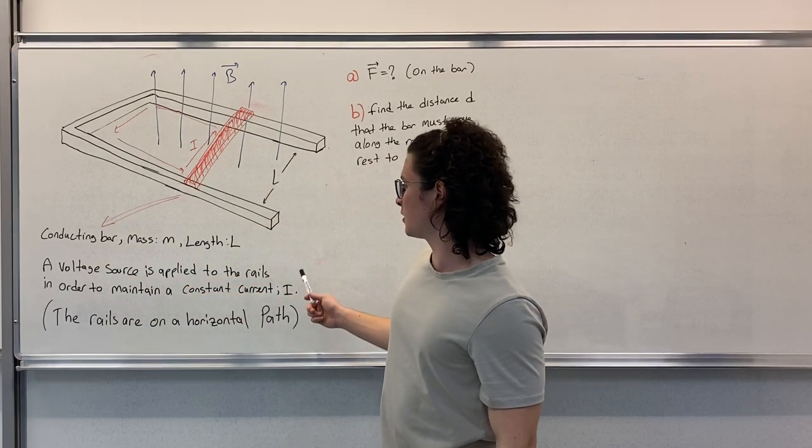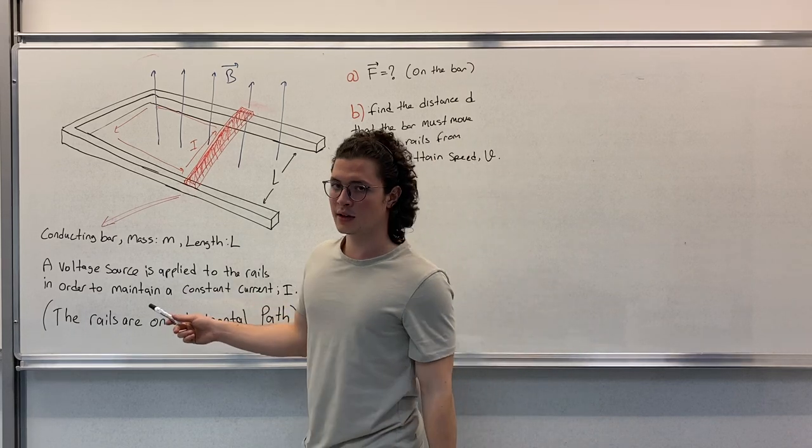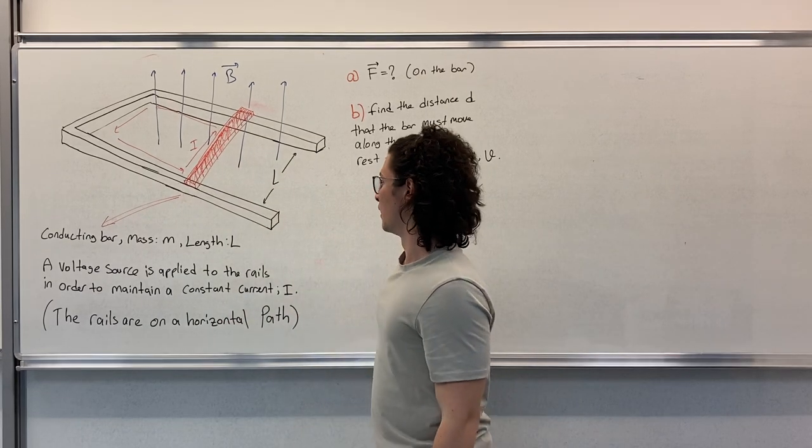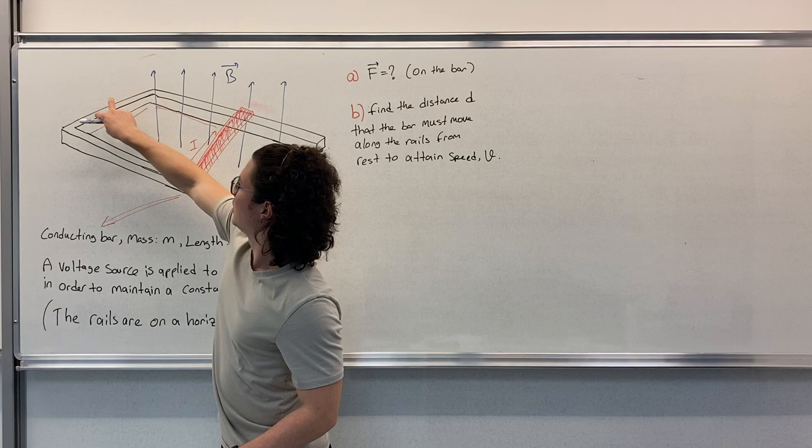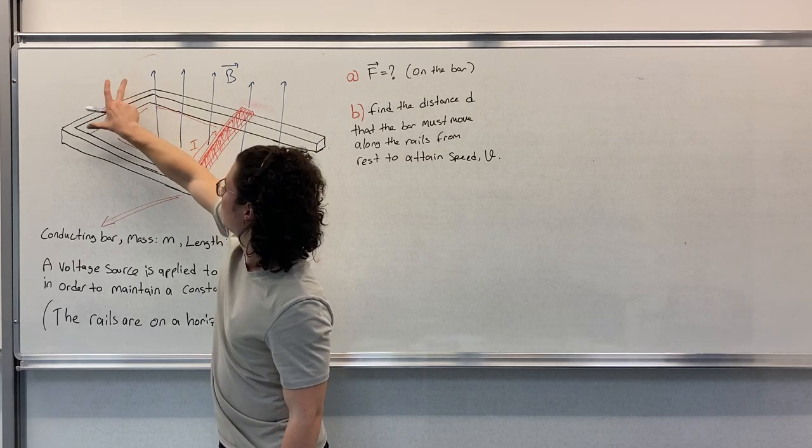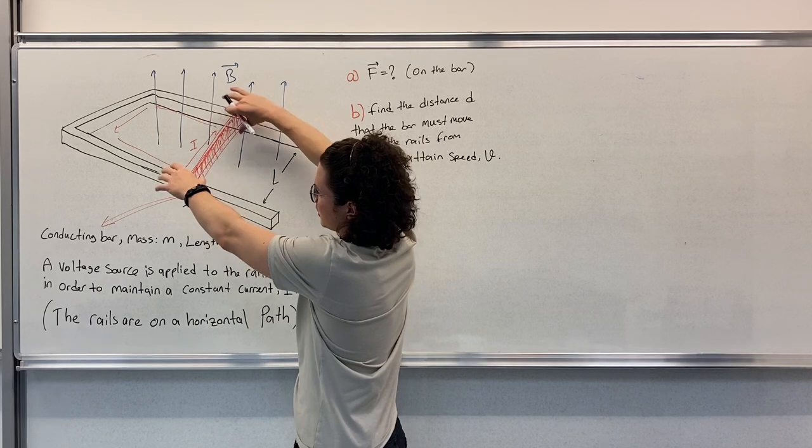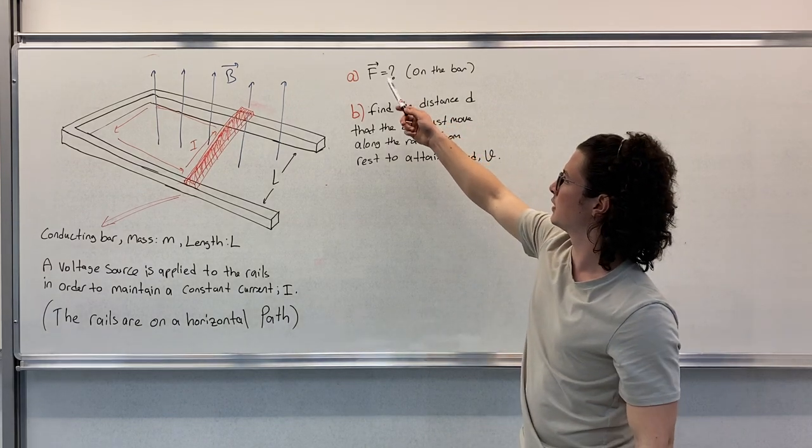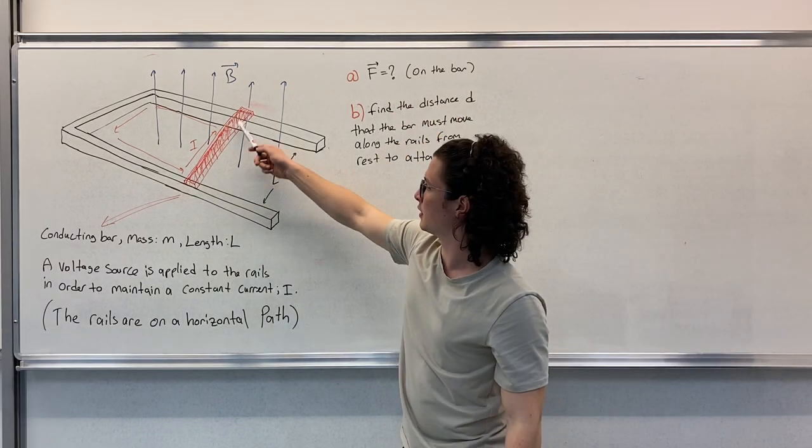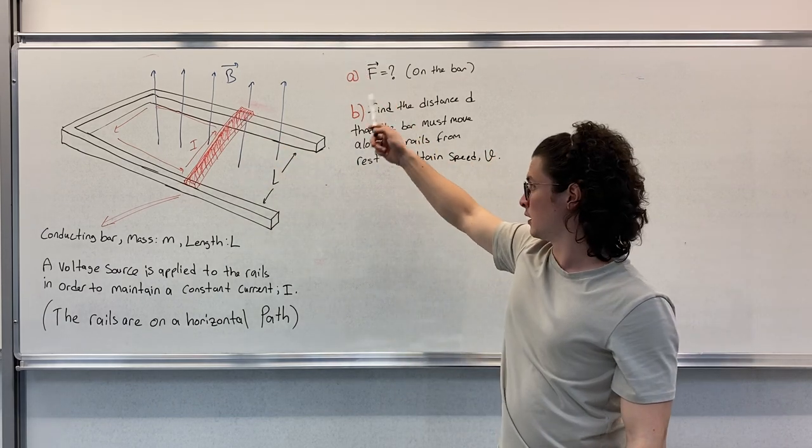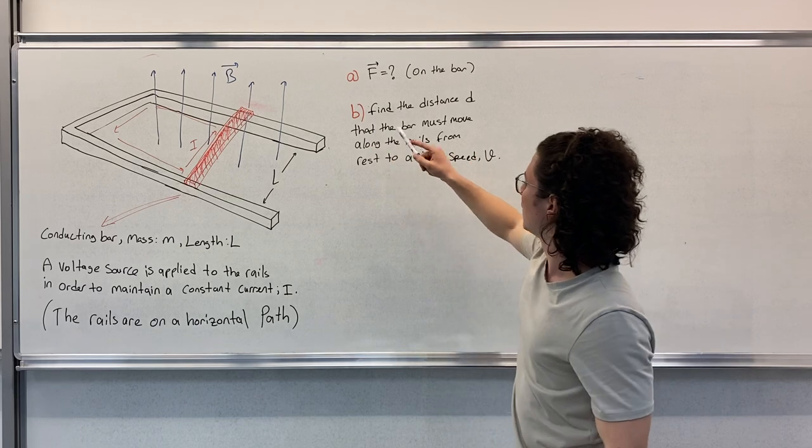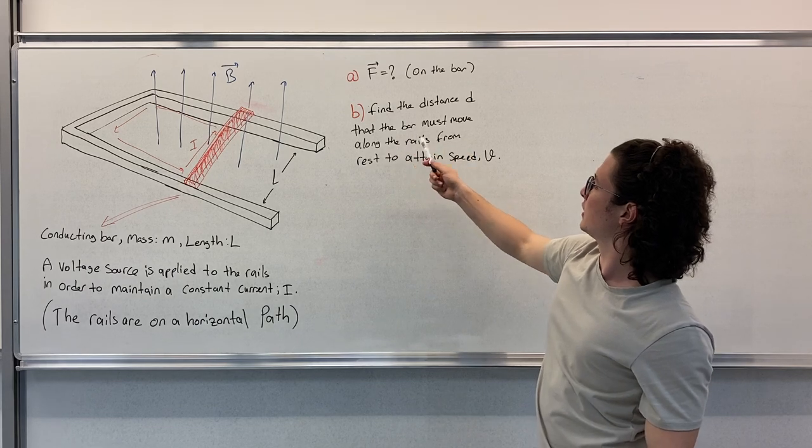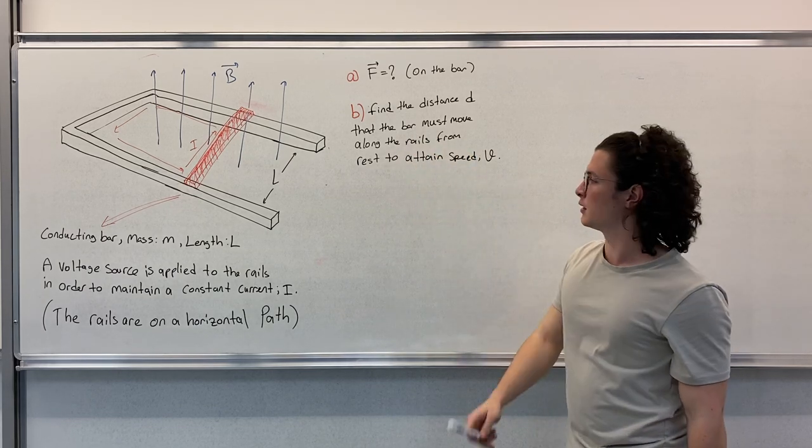A voltage source is applied to the rails in order to maintain a constant current I. This means there is no contribution from electromagnetic induction - we have a voltage source generating a constant current. The question asks us to find F on the bar, both magnitude and direction. In part B, we're asked to find the distance D that the bar must move along the rails from rest to attain speed V.